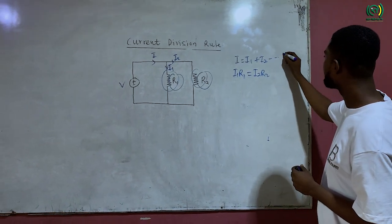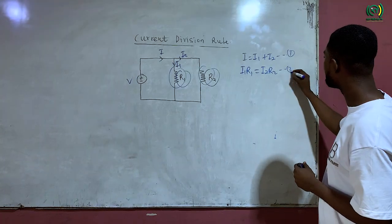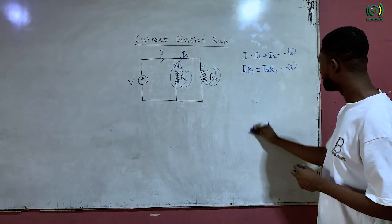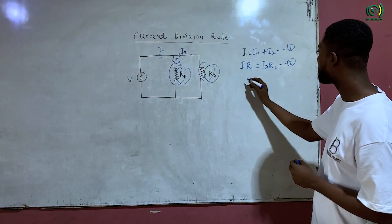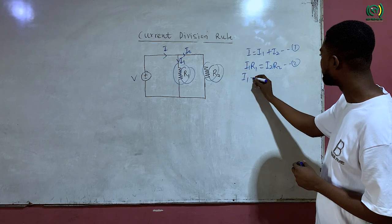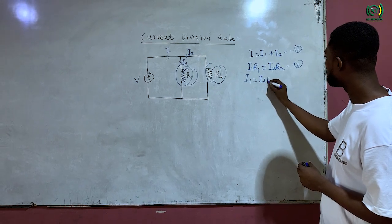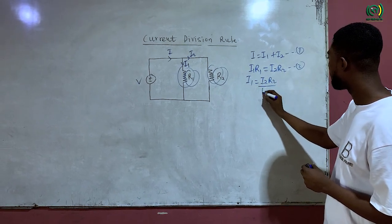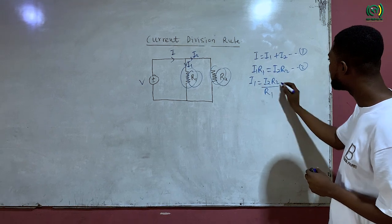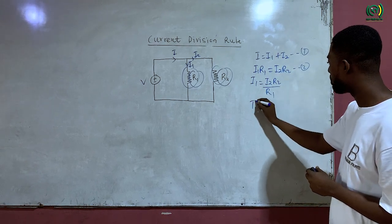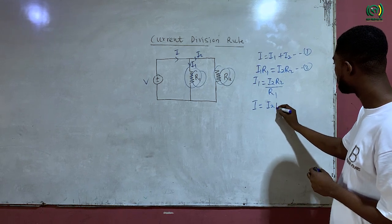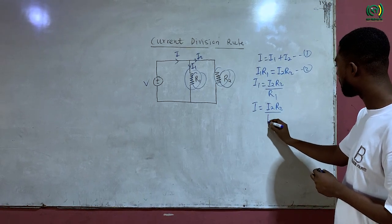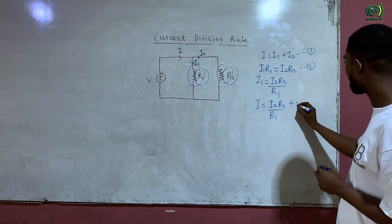So I can label this as equation 1, this as equation 2. Then I will make I1 the subject from equation 2. So I1 is equal to I2 R2 all over R1.